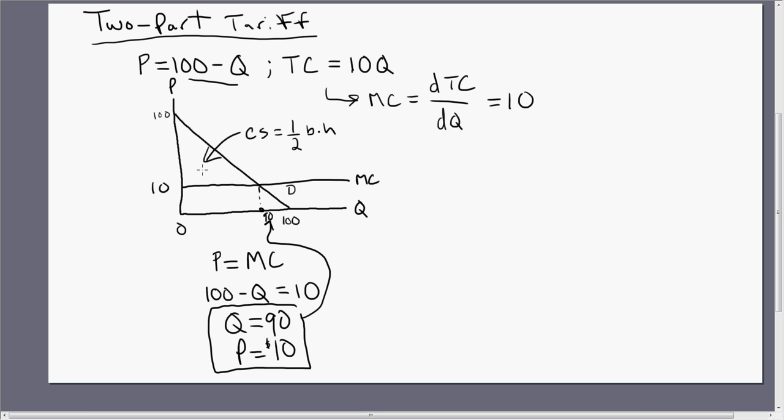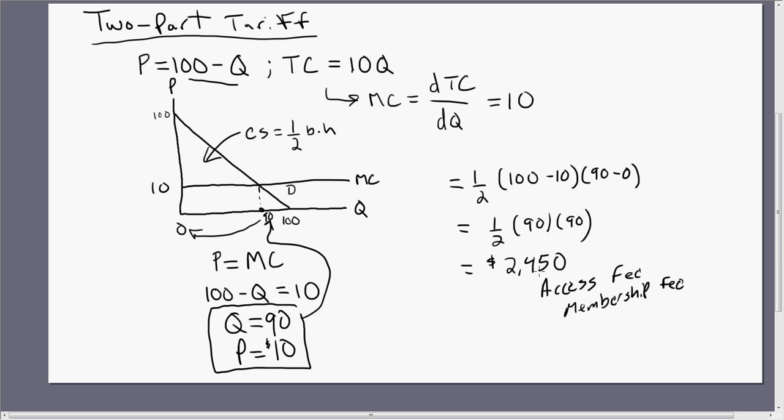So let's get the access fee. The access fee is the area of this triangle. Let me just go over here where I have more room. So the area of this triangle is going to be base times height. So 100 minus 10, we can call that the base. 90 minus 0, we can call that the height. So one-half, 90 times 90 is going to be $2,450. This is the access fee or membership fee. Consumers must first pay this access fee before they can buy any units at $10 a piece. And that's how you solve a two-part tariff problem.